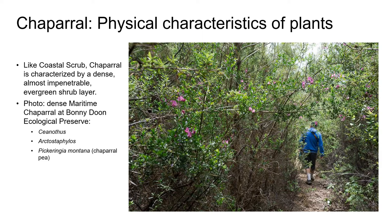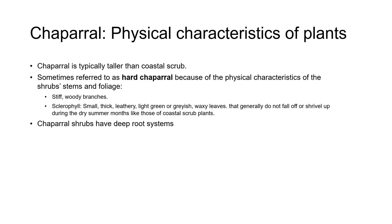Let's look at the typical physical characteristics of shrubs found in Chaparral. Like Coastal Scrub, Chaparral is characterized by a dense shrub layer that is almost impenetrable. The photo shows the dense shrub cover of Maritime chaparral at Bonny Doon Ecological Reserve, which would be virtually impossible to hike through without maintained trails. The shrubs include Ceanothus, Arctostaphylos, and Pickeringia montana — the Chaparral Pea with its distinctive magenta flowers.